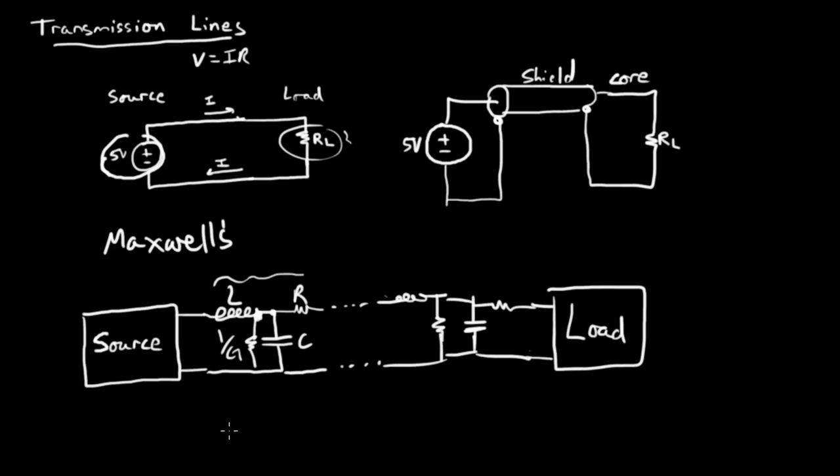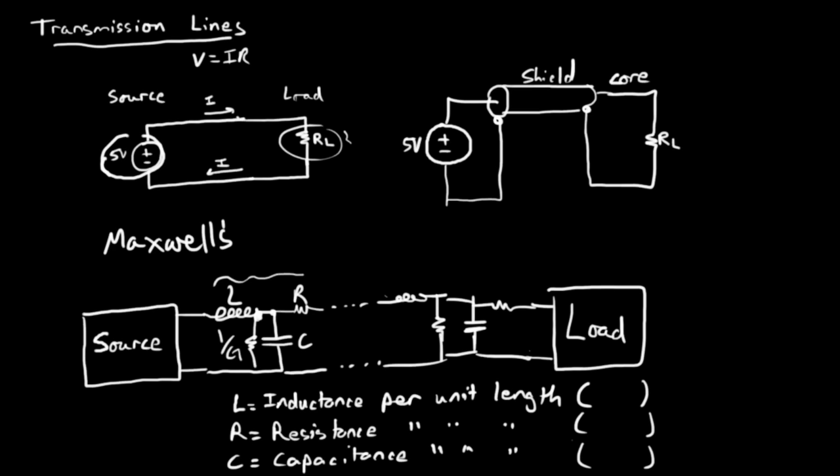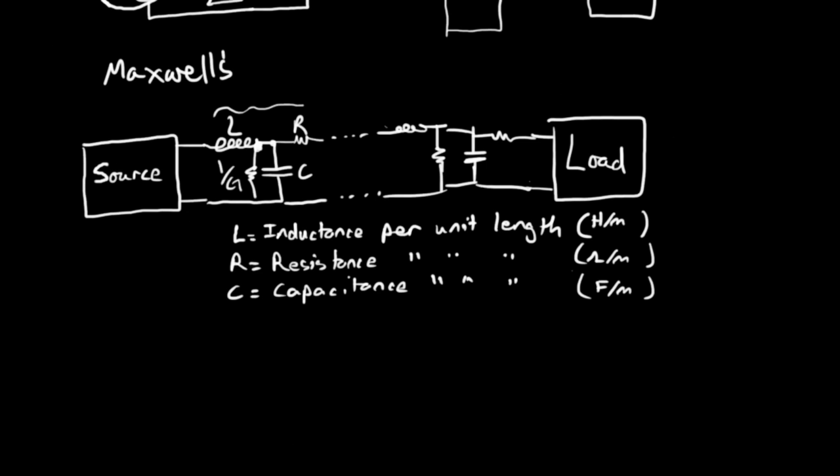It's a little messy, but anyways, here let me write it up. Different segments, we have inductance per unit length, which is Henry's per meter, resistance per unit length, which is ohms per meter, capacitance, which is farads per meter, and if I scroll down and write conductance per unit length, which is Siemens per meter.